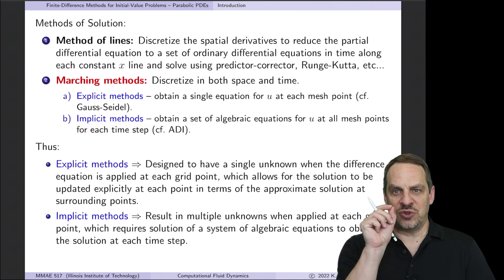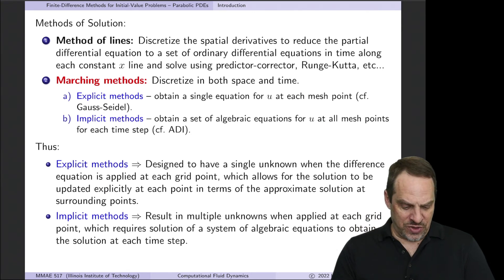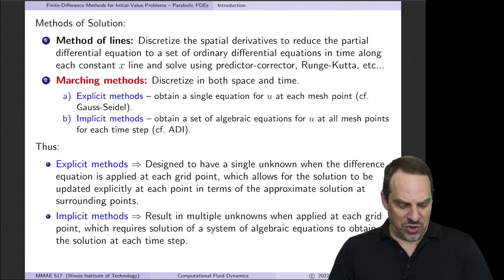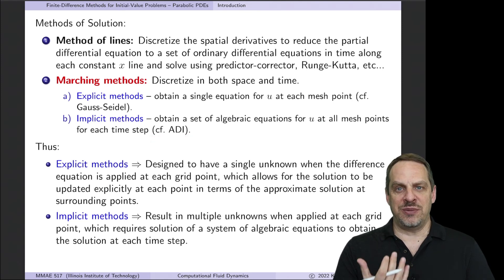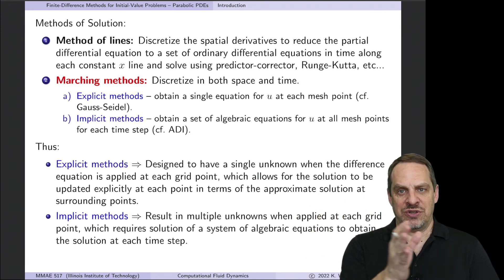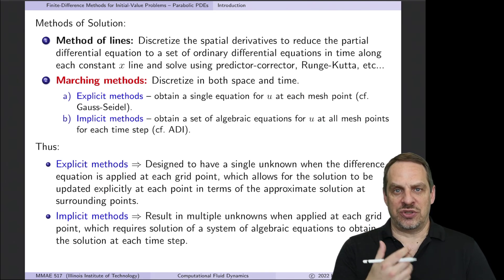Implicit methods, on the other hand, instead of getting an explicit expression for just one unknown, when we apply the finite difference method to each point, we're actually going to get a set of algebraic equations. So actually a system of linear algebraic equations that we'll need to solve for the dependent variable for all the mesh points along a given time step. So we have now multiple unknowns, so it's an implicit equation. We have to solve the solution implicitly. So this is analogous to the alternating direction implicit method, the ADI method that we discussed for elliptic equations, where we apply the finite difference equation at each point, and we get a series of unknowns. All those equations for the unknowns are coupled together. It's a tridiagonal system of equations, in ADI, that we need to solve. So that's an implicit expression. There's more than one unknown.